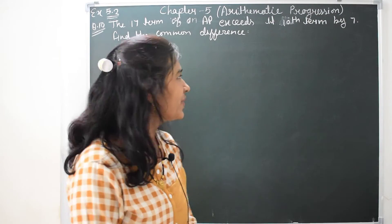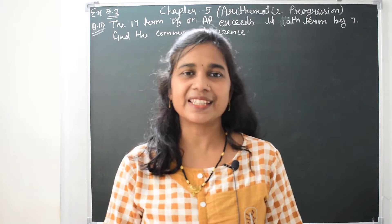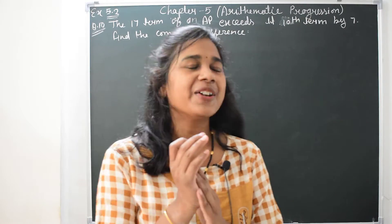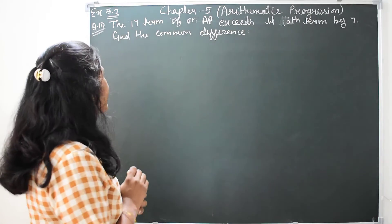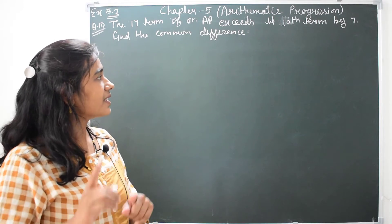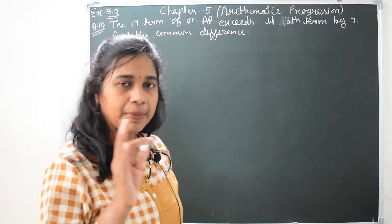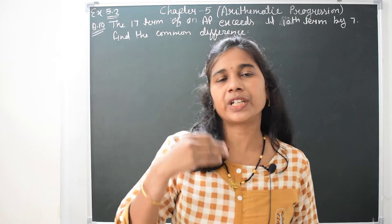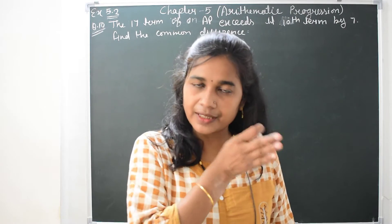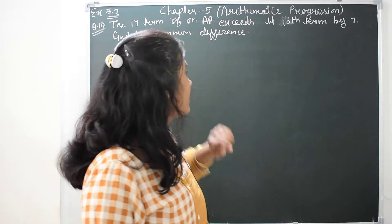Okay guys, today we are doing question number 10, exercise 5.2. The chapter is Arithmetic Progression. The question is: the 17th term of AP exceeds its 10th term by 7, find the common difference.